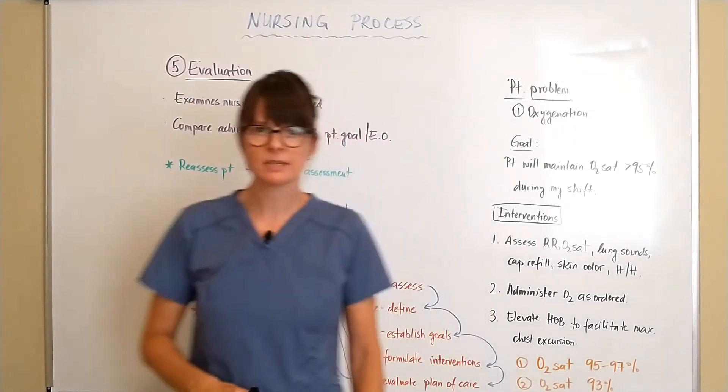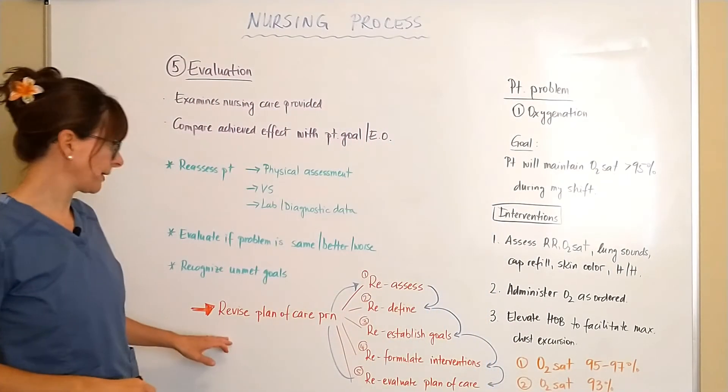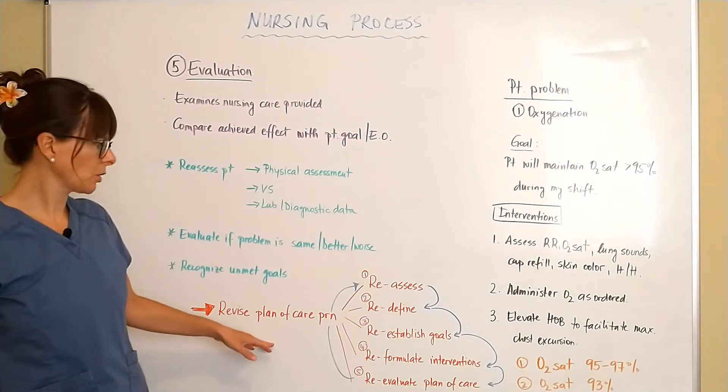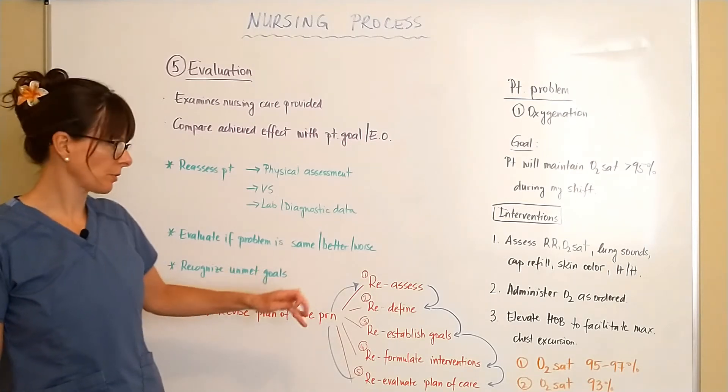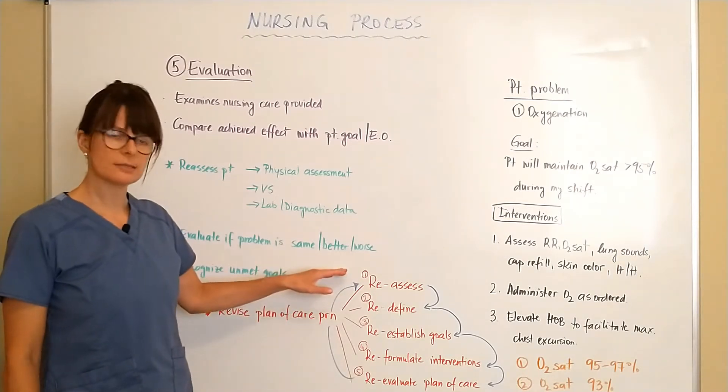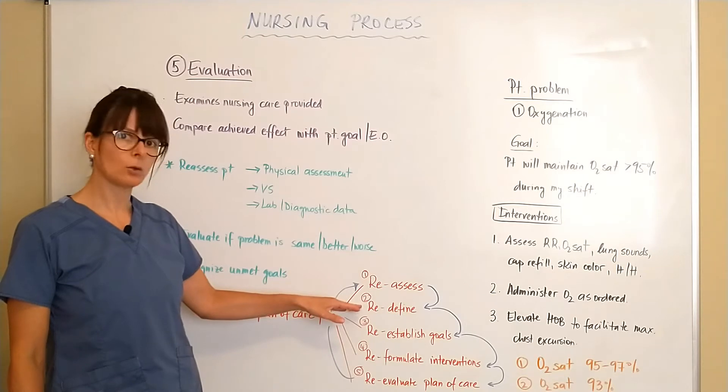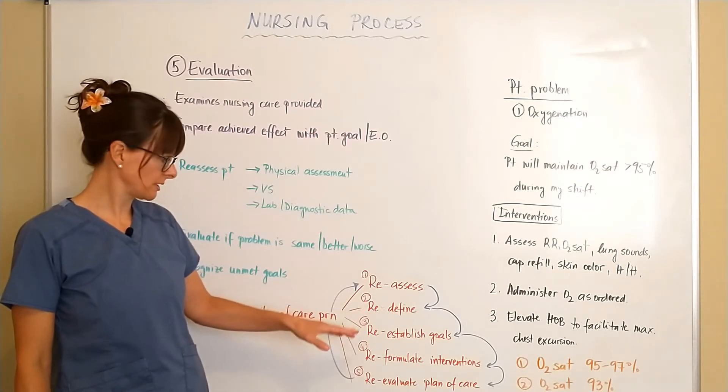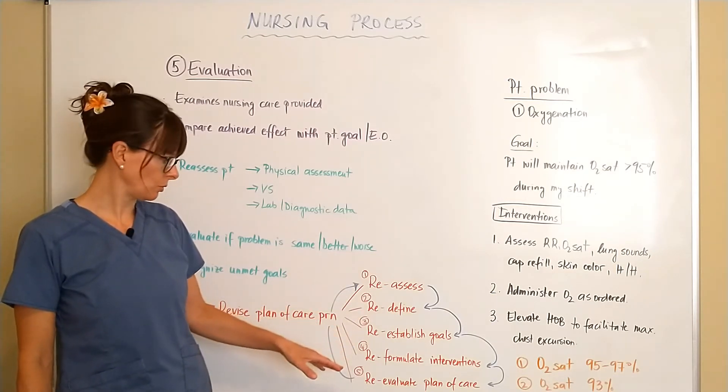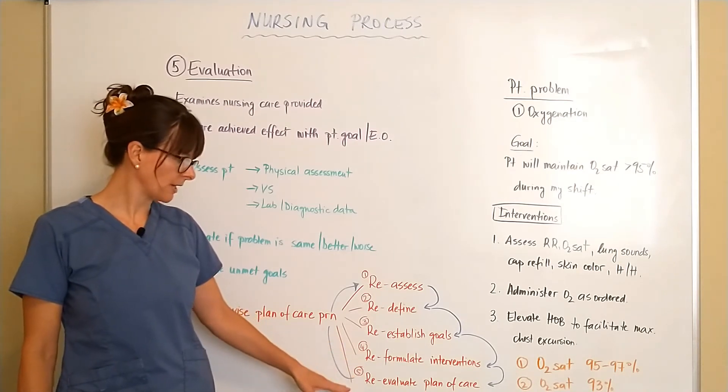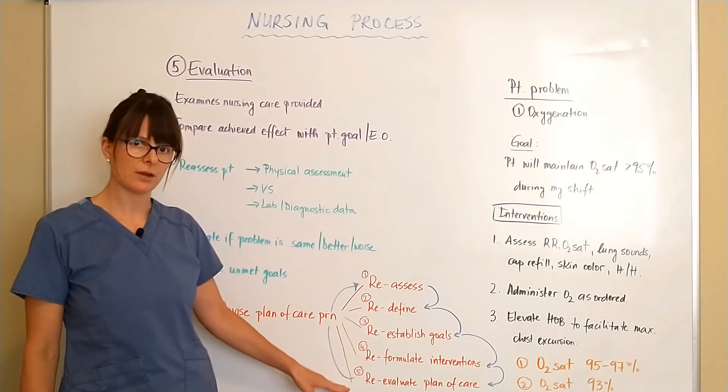Now if this happens if we have to revise the plan of care we basically go back to the steps of the nursing process. We reassess the patient, we redefine the goals, redefine the priorities, re-establish the goals, reformulate the interventions and re-evaluate the plan of care.